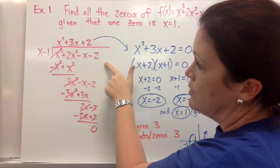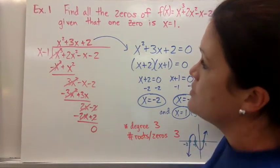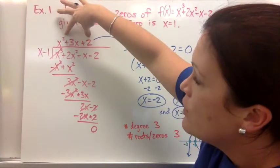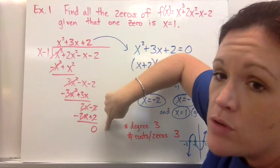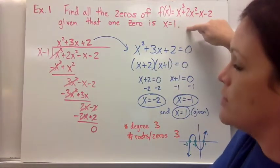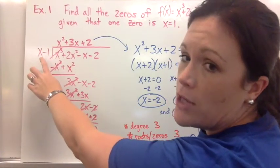So you use that factor to do long division to reduce this polynomial to quadratic form. So that ends up being my quotient. I bring that over though, I have a remainder of zero, because if they've told you that's a zero, it's a factor, they match, they go together.